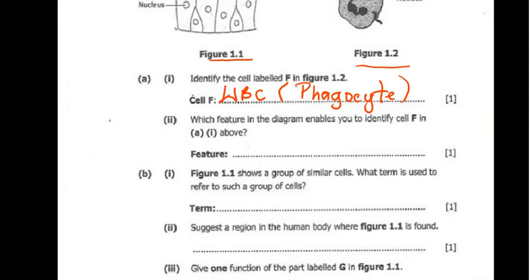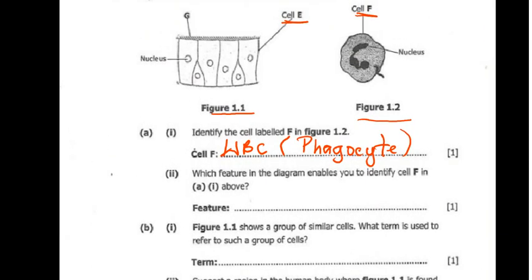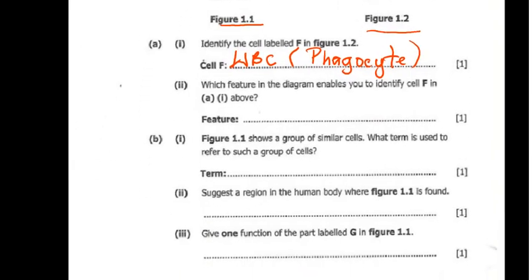And then question 1(a)(ii) says, which feature in the diagram enables you to identify cell F in (a)(i) above. So let's just bring it down a little bit. If you see the structure of the nucleus, it is lobed. So we can tell from the structure of the nucleus. So what we pretty much say here is that it has a lobed nucleus.